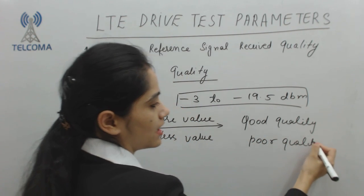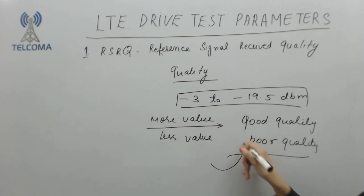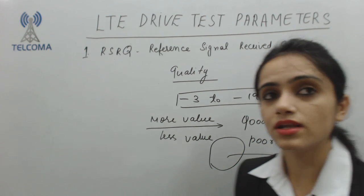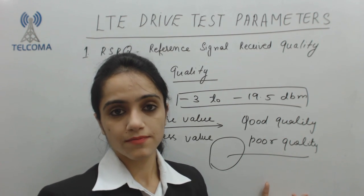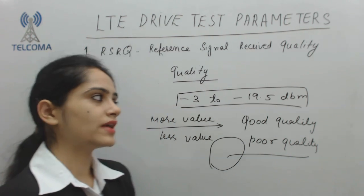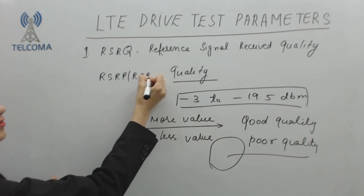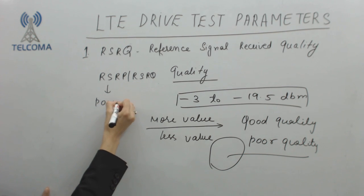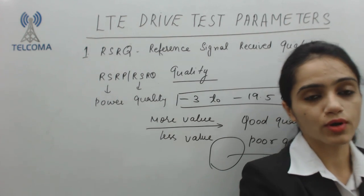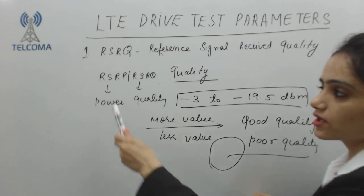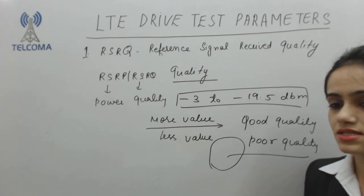In any area where we are getting low value of RSRQ, we require to encircle and take a screenshot. The optimizer will then optimize that particular area and find out the problem — why we are getting this value in that particular area. So we have discussed RSRP and RSRQ: the first parameter tells me the power and another tells me the quality. These are the factors responsible for good network performance — good power and good quality means very good network performance.